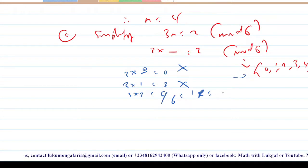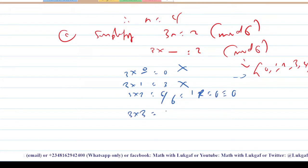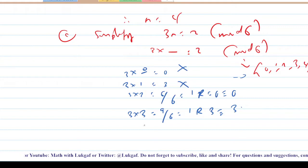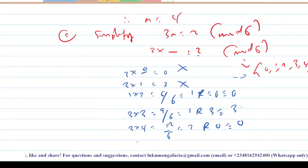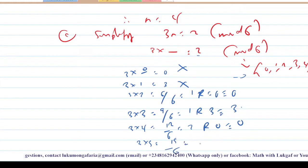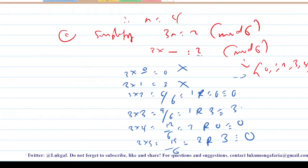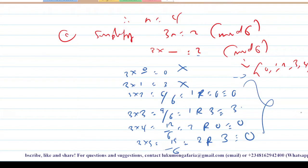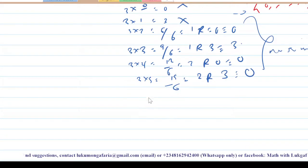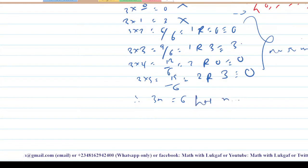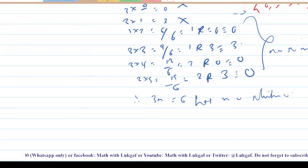Continuing: 3 times 3 is 9; modulo 6 gives remainder 3 — not 2. 3 times 4 is 12; modulo 6 gives remainder 0 — not 2. We did not find any number to multiply by 3 that gives 2 in modulo 6, so we conclude: 3n congruent to 2 modulo 6 has no solution.